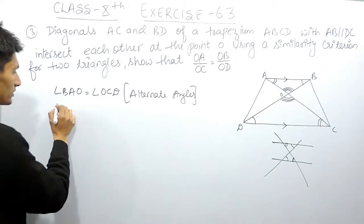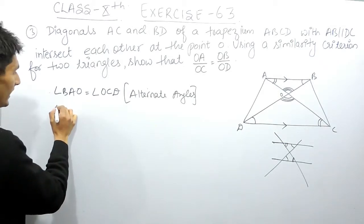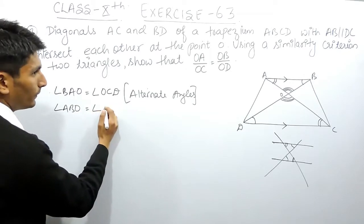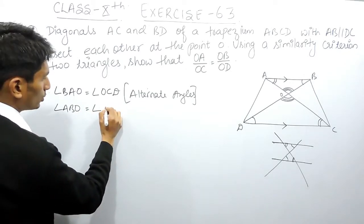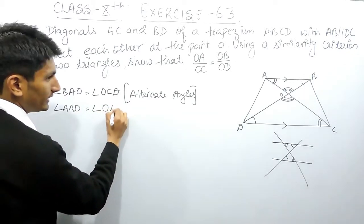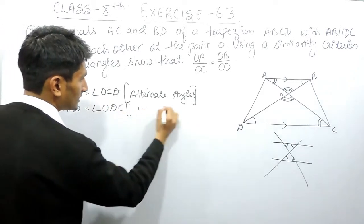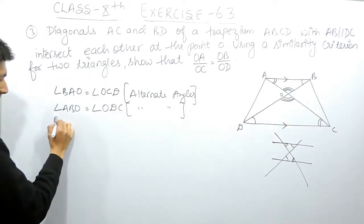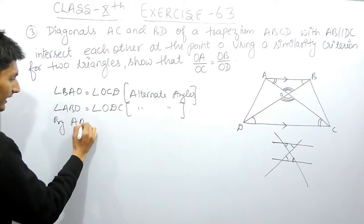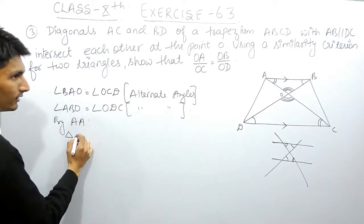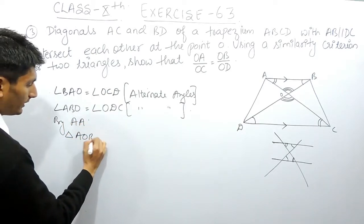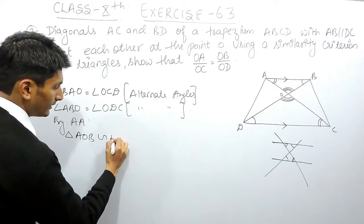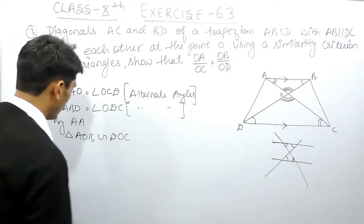Similarly, we can also say that angle ABO is equal to angle ODC — again, because of alternate angles. By the Angle-Angle (AA) property, triangle AOB can be proved similar to triangle DOC.